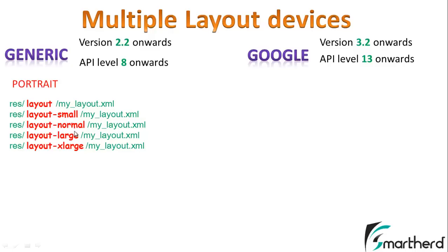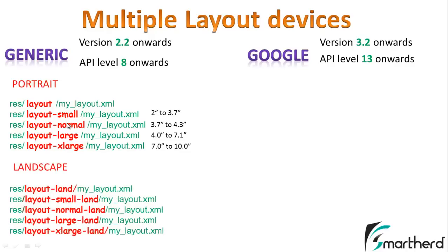Small, normal, large, and xlarge actually indicate how long your screen is diagonally — roughly 2 to 3.7 inch, 3 to 4.3 inch, 7 to 10 inch, and so on. Simultaneously, you have to create layouts for landscape mode as well, by adding the suffix -land to each of the portrait mode folder names. So a total of 10 folders are required to make your application run flexibly on all devices with perfect dimensions.